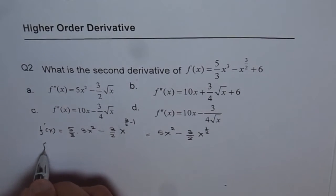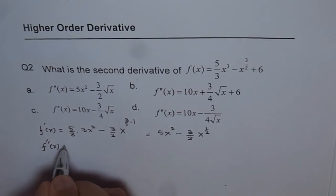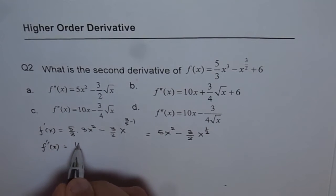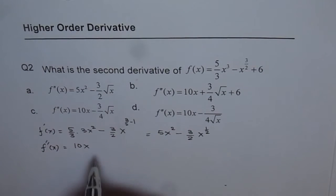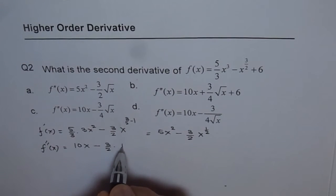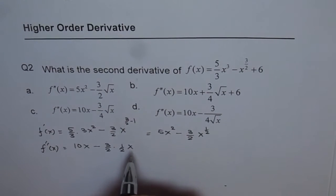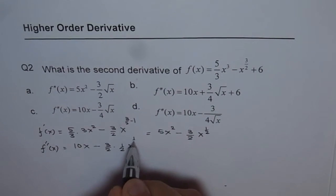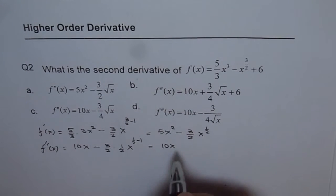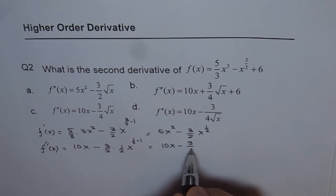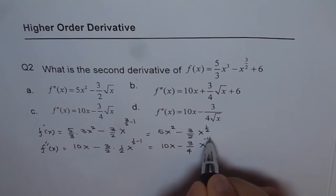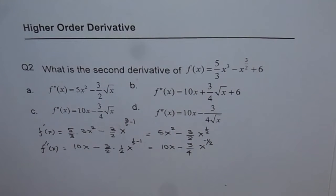Now the second derivative will be equal to: 5 times 2 is 10, so we get 10x minus 3 over 2 times 1 over 2 x to the power of half minus 1, which can be written as 10x minus 3 over 4 x to the power of minus half. So that is our answer.